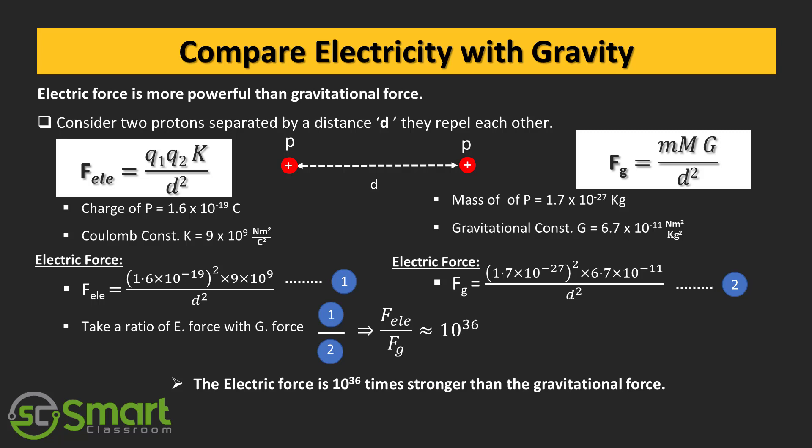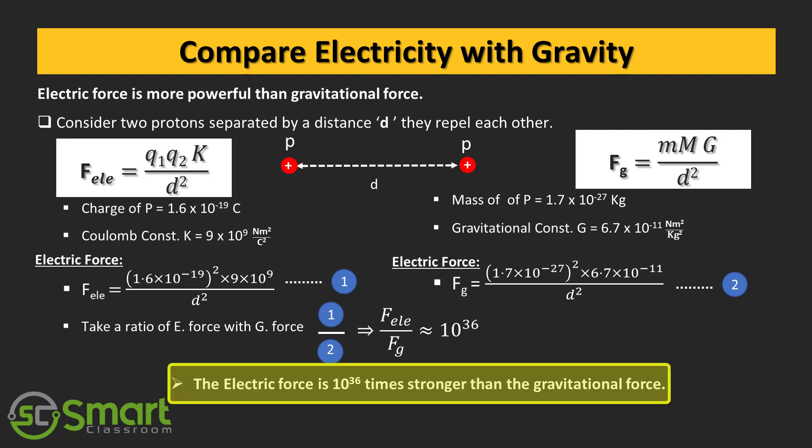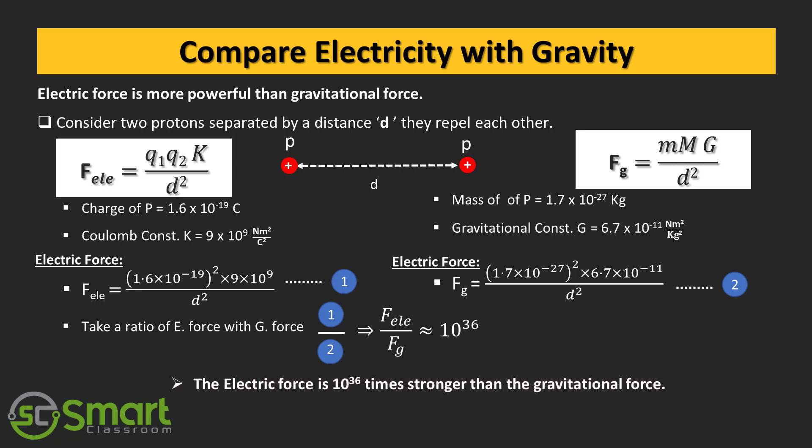That means the electric force is 10 to the power 36 times stronger than the gravitational force. 10 to the power 36 means 1 after 36 zeros. Now you can realize how strong the electric field is compared with gravity.